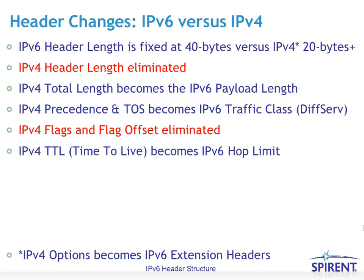The IPv4 time-to-live field now becomes the IPv6 hop limit. Originally, the IPv4 time-to-live was thought to be like clock ticks or seconds as packets traveled through the network, but it was considered impractical to keep track of time in that manner in a live network. So the hop limit concept is also the way that IPv4 thinks of it today.